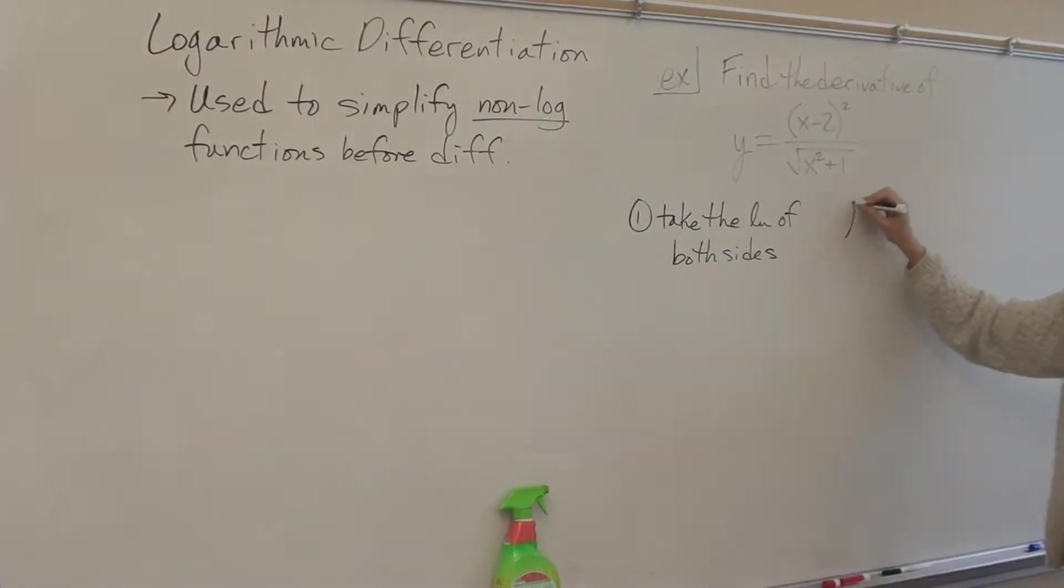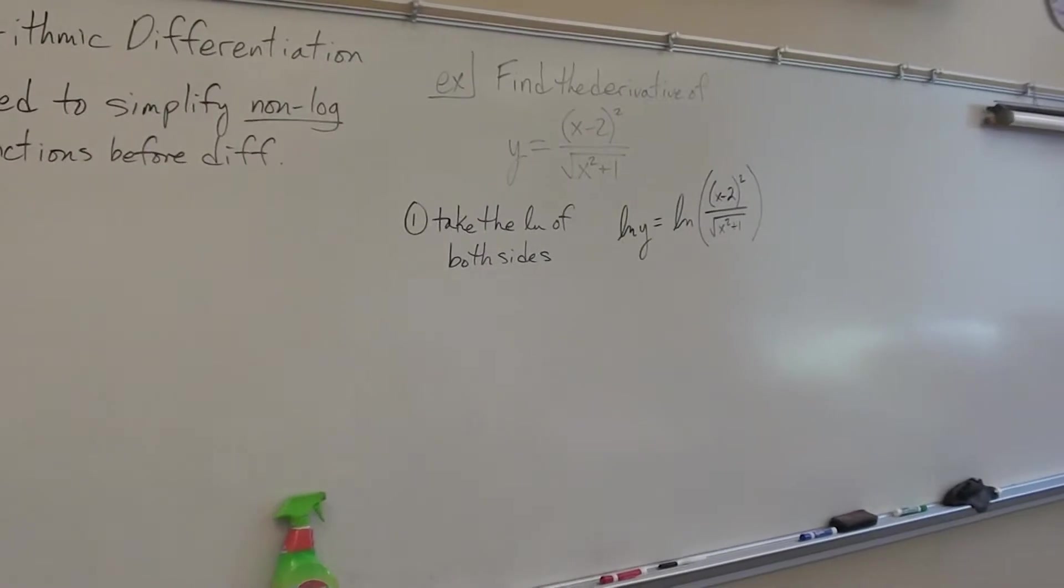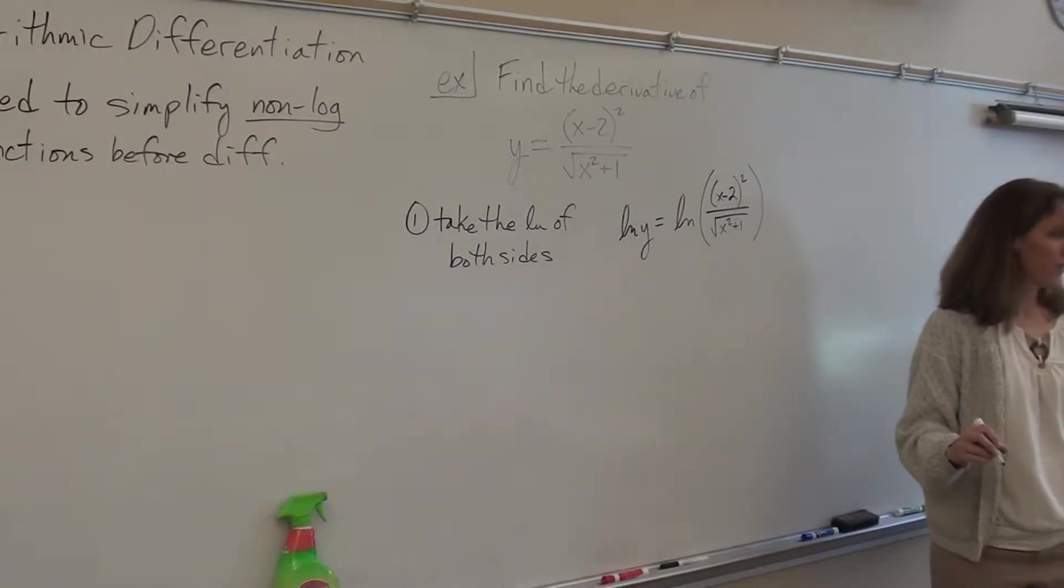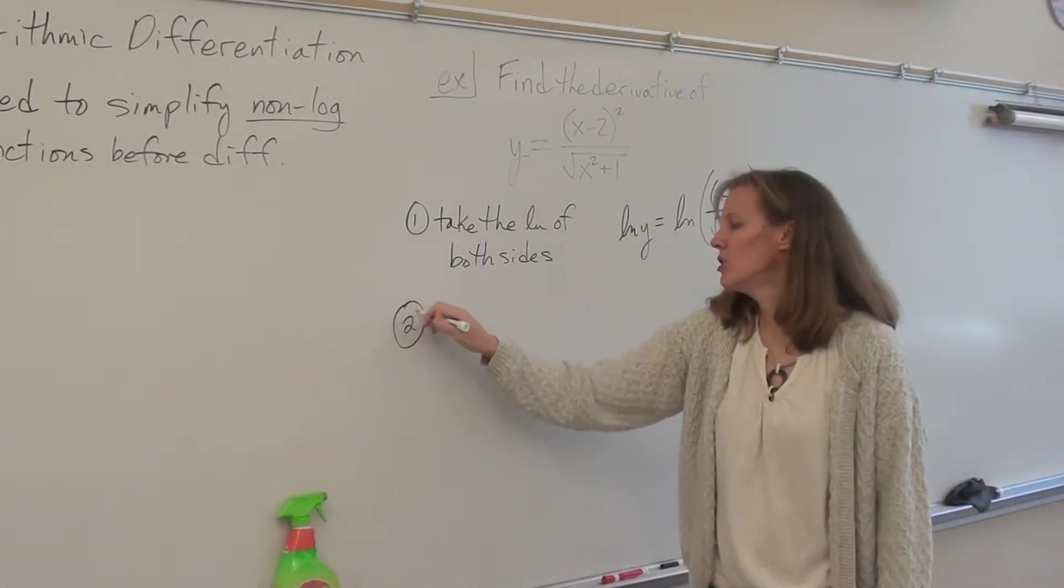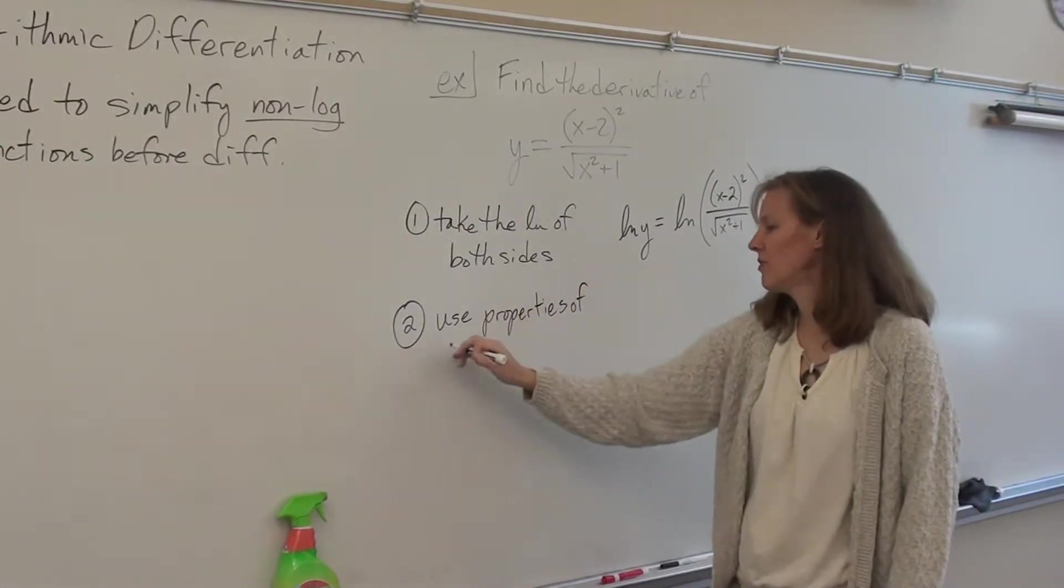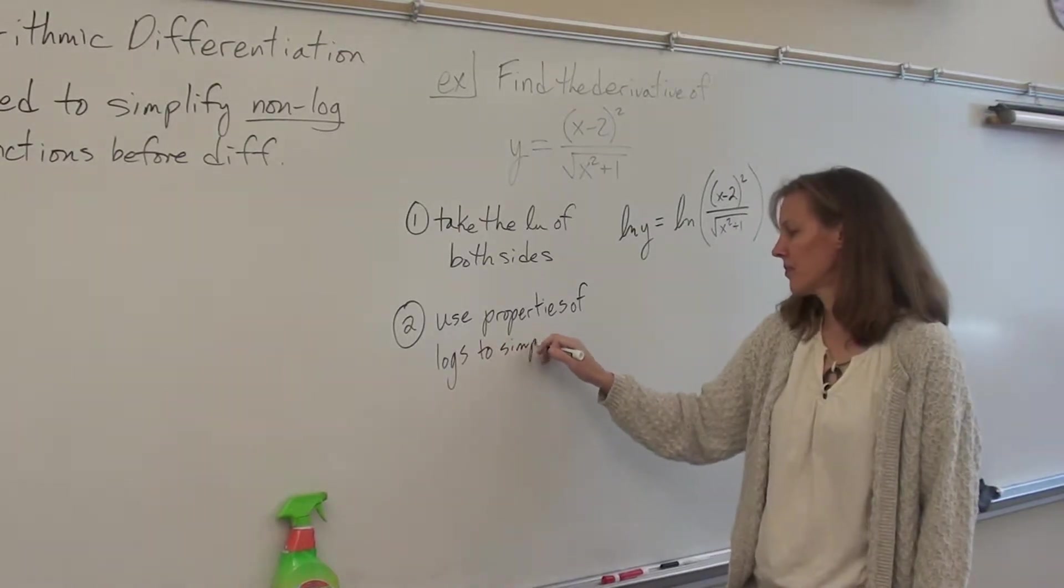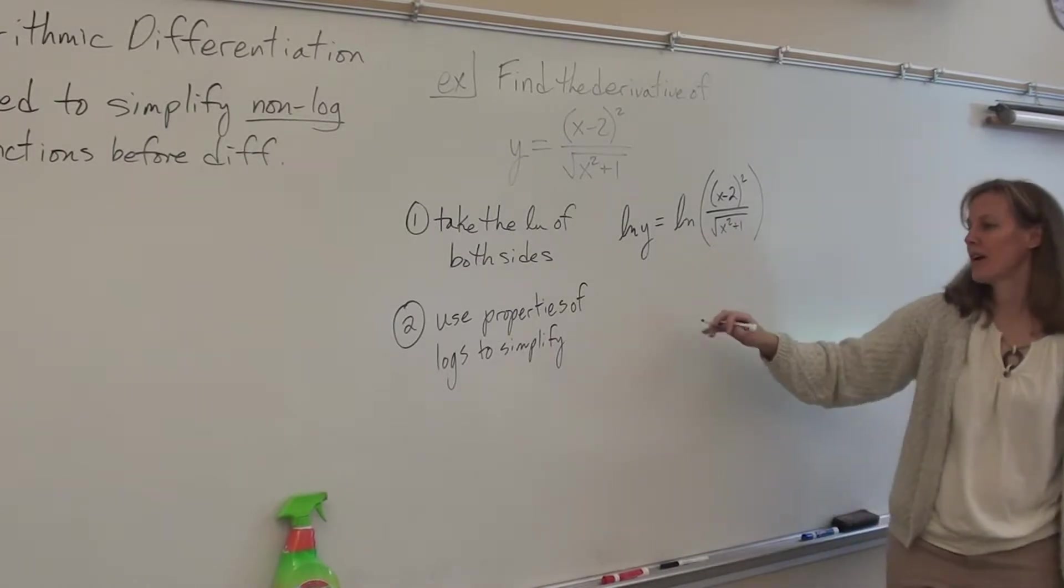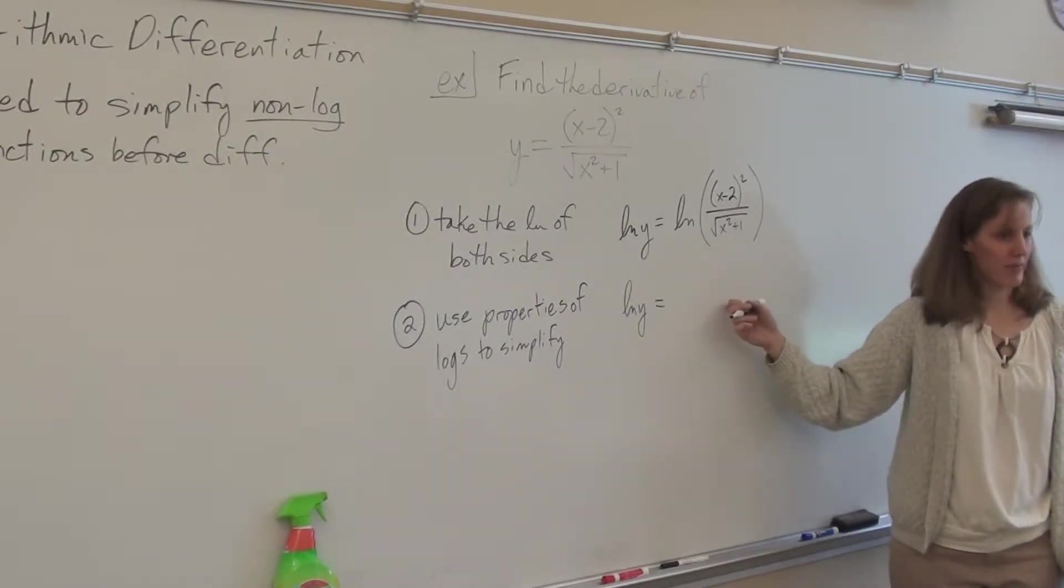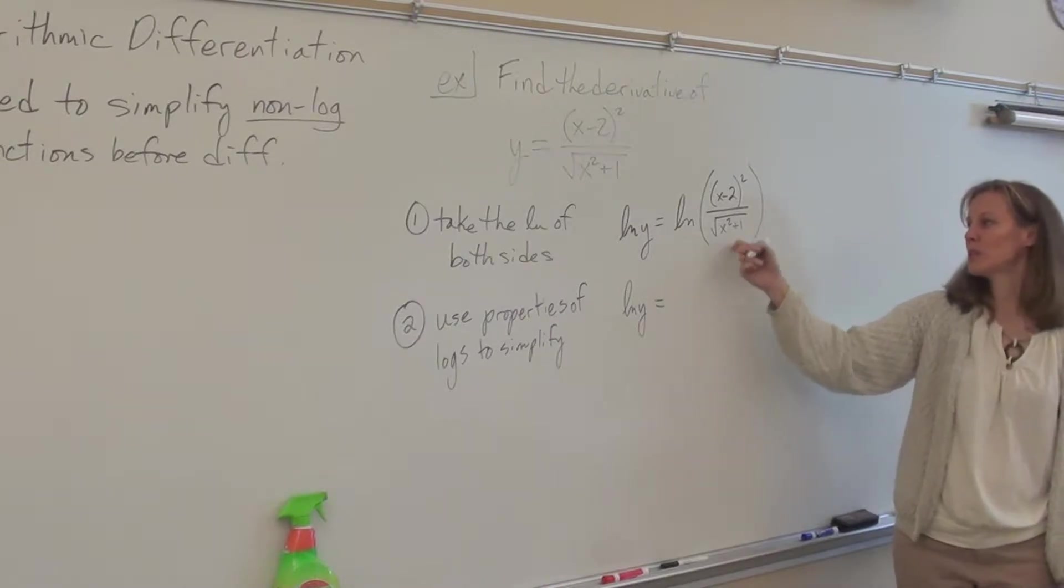So what we get is ln y equals ln of this very large argument. Step two, you're going to use properties of logs to simplify. So the left side is pretty simple, ln y. But the right side, we could really break this thing up. Let's do it. I want you guys to take a minute and I want you to expand this log.